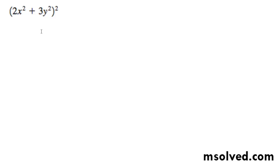Perform the following operations and simplify. Rewriting this, we get 2x squared plus 3y squared. We'll rewrite it without the exponent to set up the expansion.